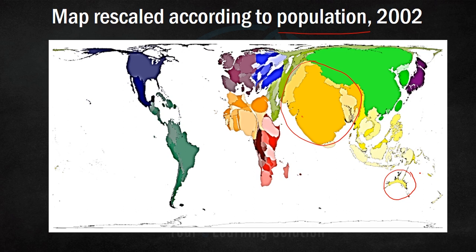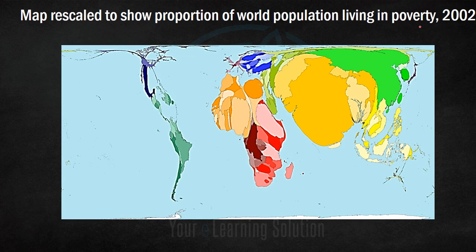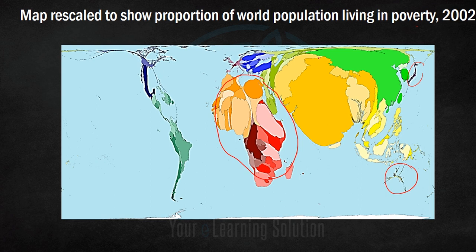Now let's look at this map which shows the proportion of world population living in poverty. Again, the map has been rescaled — this is not actually how the world looks in terms of geographical area, but the regions which have a large poor population have been blown up or expanded to show their prominence.